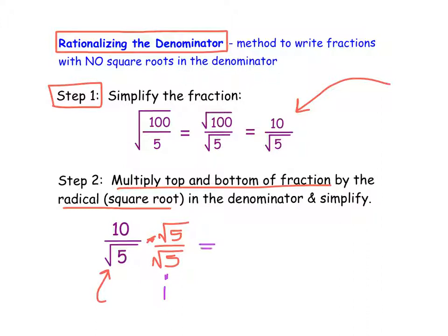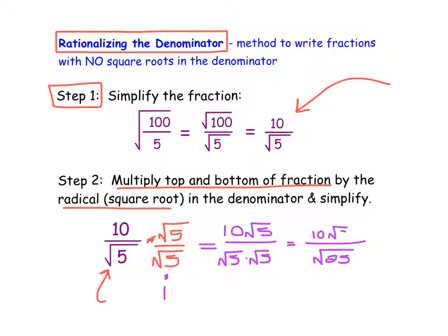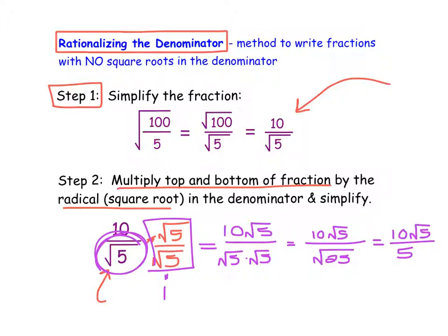Our numerator becomes 10 square roots of 5. Our denominator becomes the square root of 5 times the square root of 5, which simplifies to the square root of 25, and then the square root of 25 becomes just 5. By multiplying both the numerator and denominator by our problem, we rewrote the fraction to be 10 times the square root of 5 all divided by 5, with no square root in the denominator. Our final step is to simplify the 10 over 5 outside the square root, giving us 2 square roots of 5 over 1.